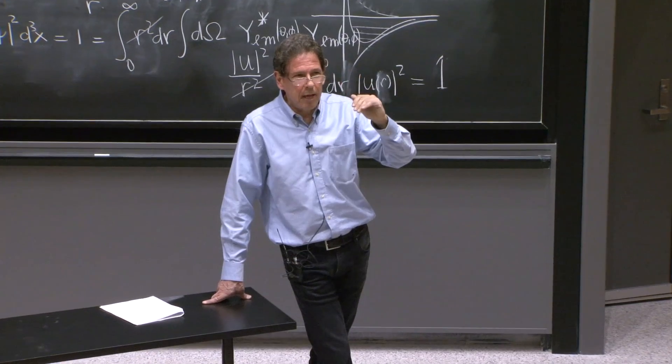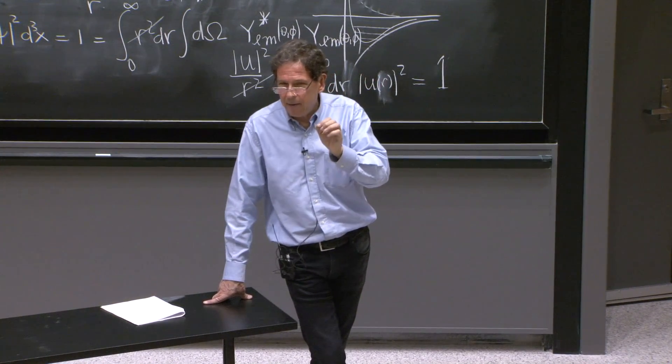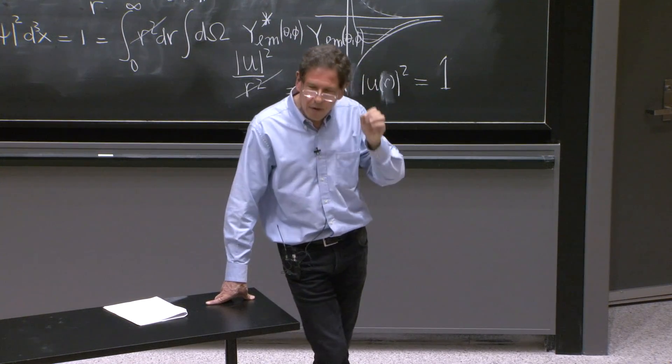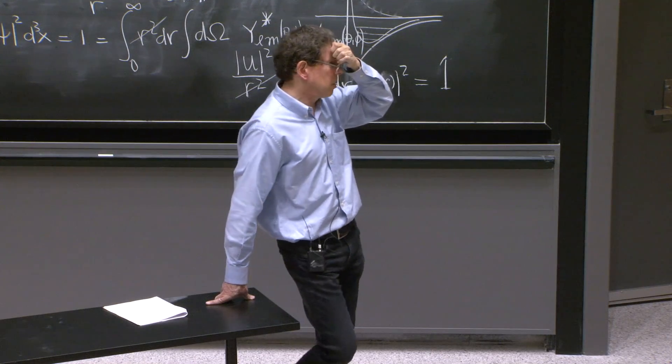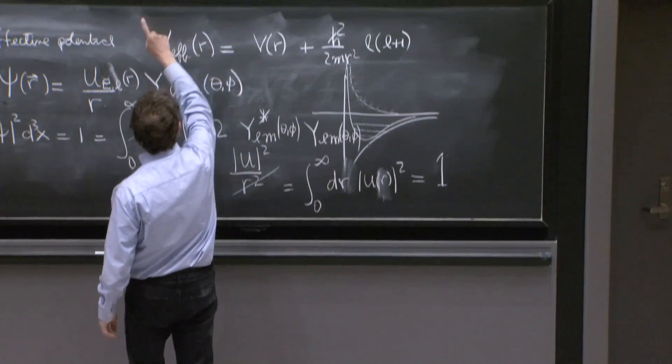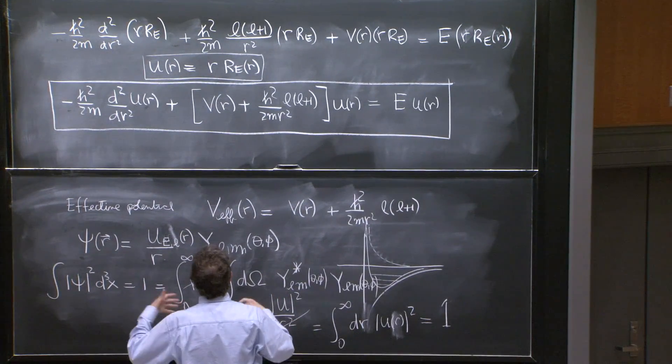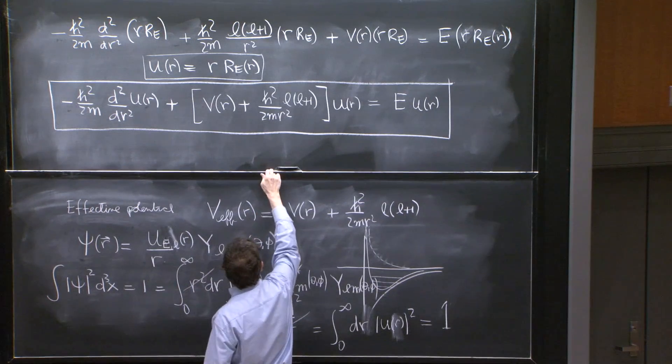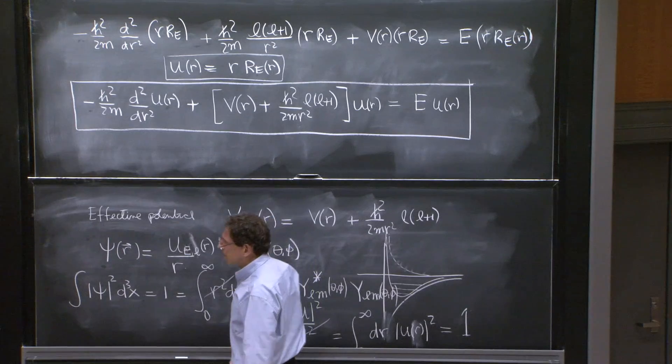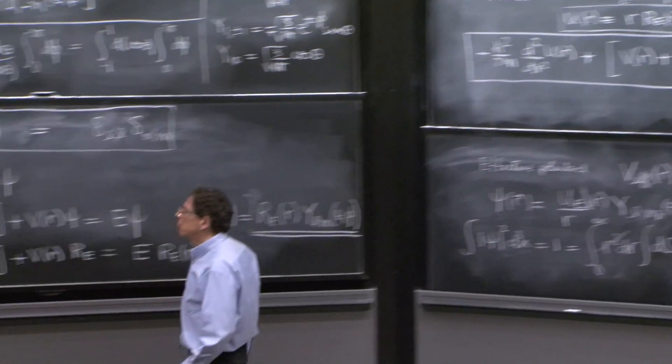like the Coulomb potential, is weaker than the centrifugal barrier as r goes to 0, the centrifugal barrier dominates when r goes to 0. And this differential equation, as r goes to 0,